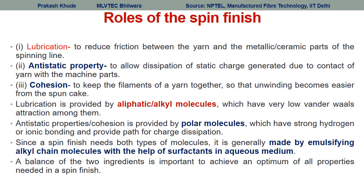The first role of spin finish is lubrication — to reduce friction between the yarn and metallic parts, since the filament passes through various metallic components. The second role is anti-static property, which allows proper distribution of static charges generated due to contact. The third role is cohesion — to keep the filaments of the yarn together so that unwinding becomes easier. These are the three main basic roles of spin finish: lubrication, anti-static property, and cohesion.